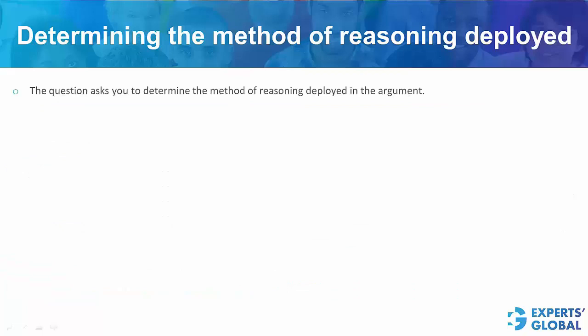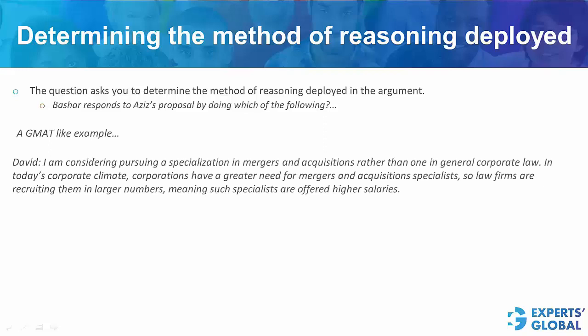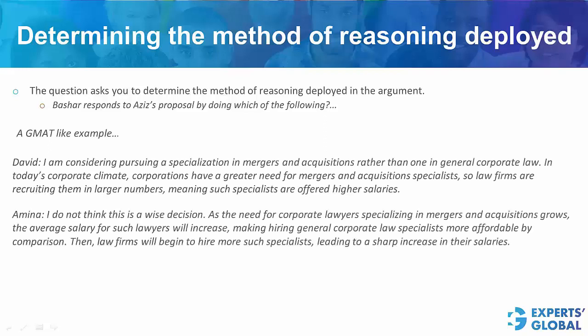Let's look at the other question type within determining the method of reasoning deployed. This is when a dialogue is given to you, and the question is on the lines of: the second person responds to the first person by doing which of the following? Let's take a GMAT-like example. Here is an example — the first person said something, then the second person responded with something, and this is the question stem. Step 1 would be to read the question stem, step 2 would be to read the dialogue, and step 3 would be to have a broad expectation from the correct answer choice.